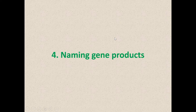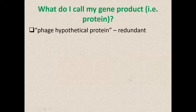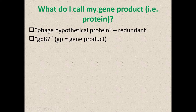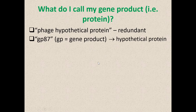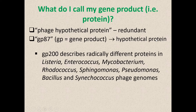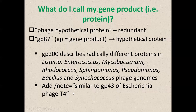Now we get to the point of naming these things. 'Phage hypothetical protein' or 'phage protein' is redundant — get rid of 'phage' and just leave it as 'hypothetical protein.' Many people use GP (gene product), but GP87 or GP200 means nothing. I searched for GP200 in the protein database and found completely different proteins across phage genomes. Please change these to hypothetical proteins.